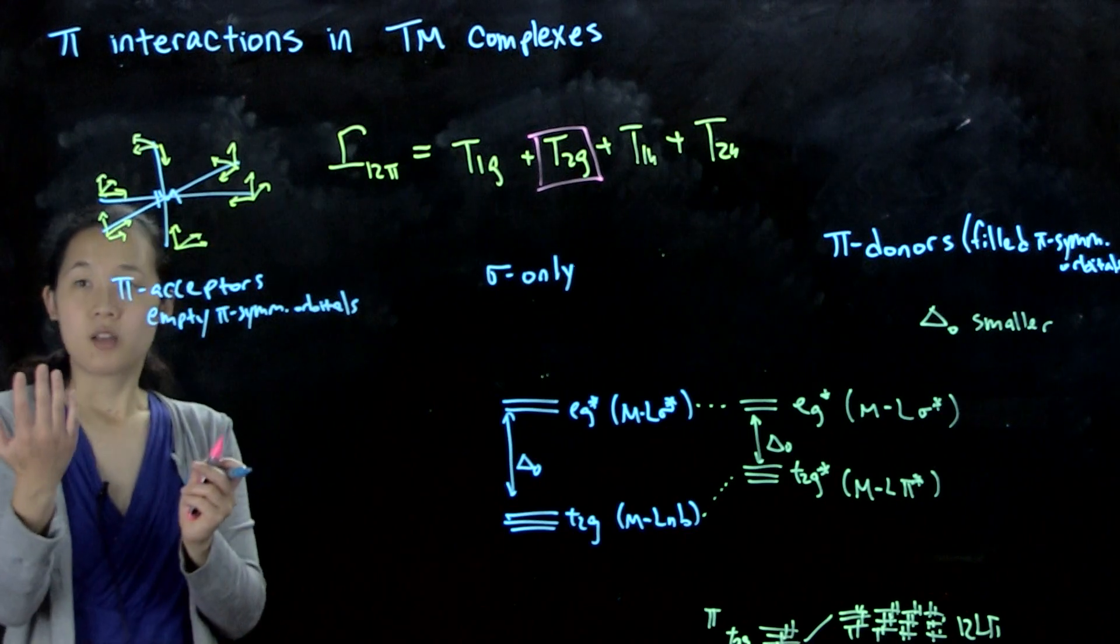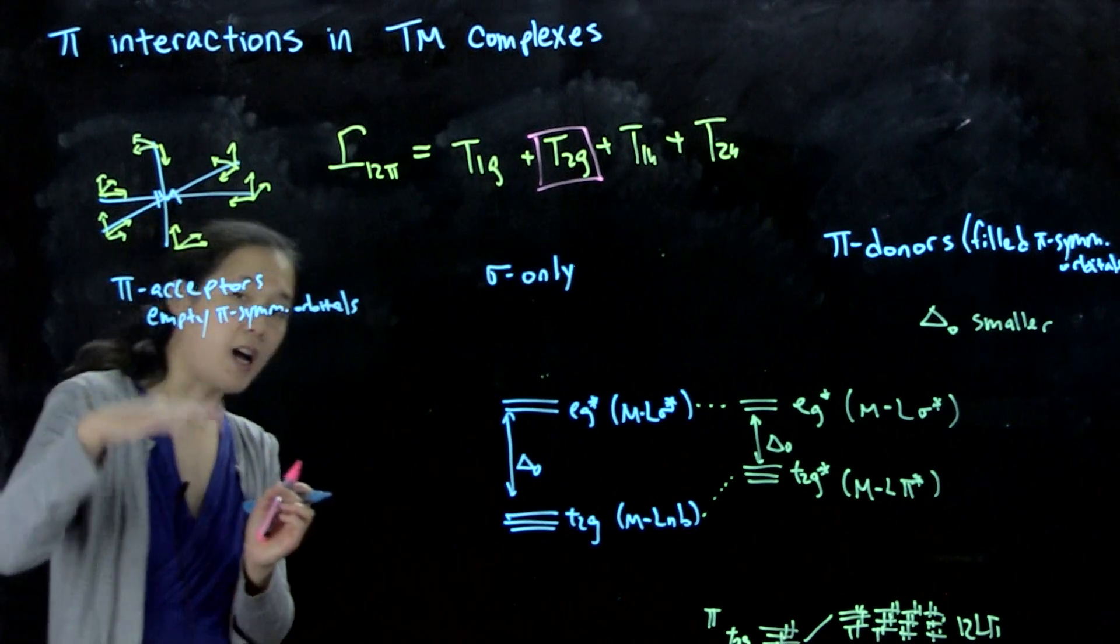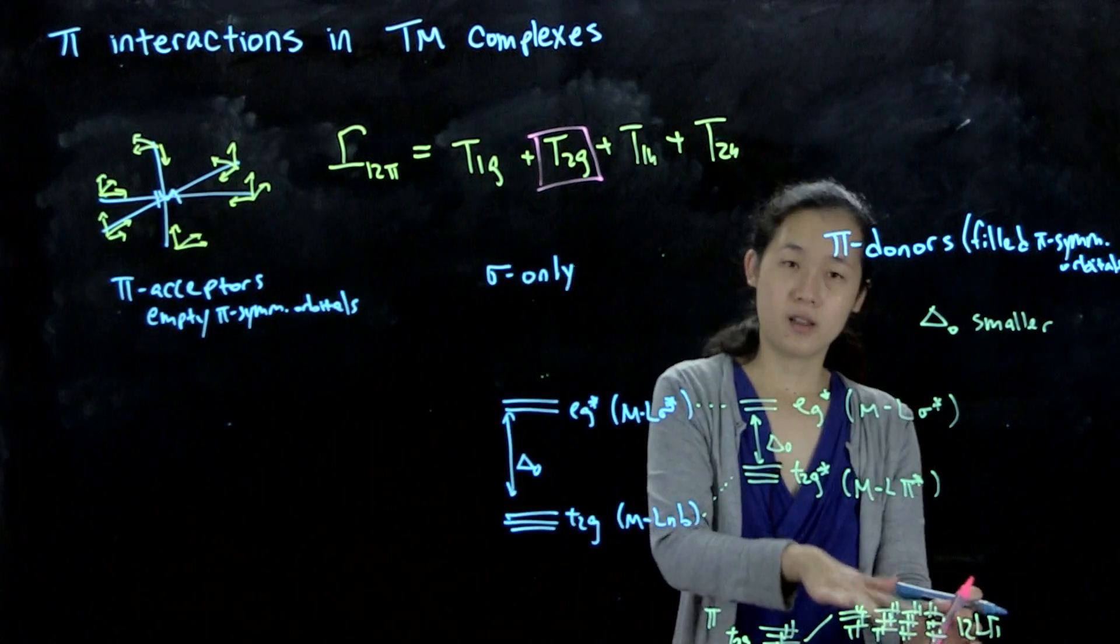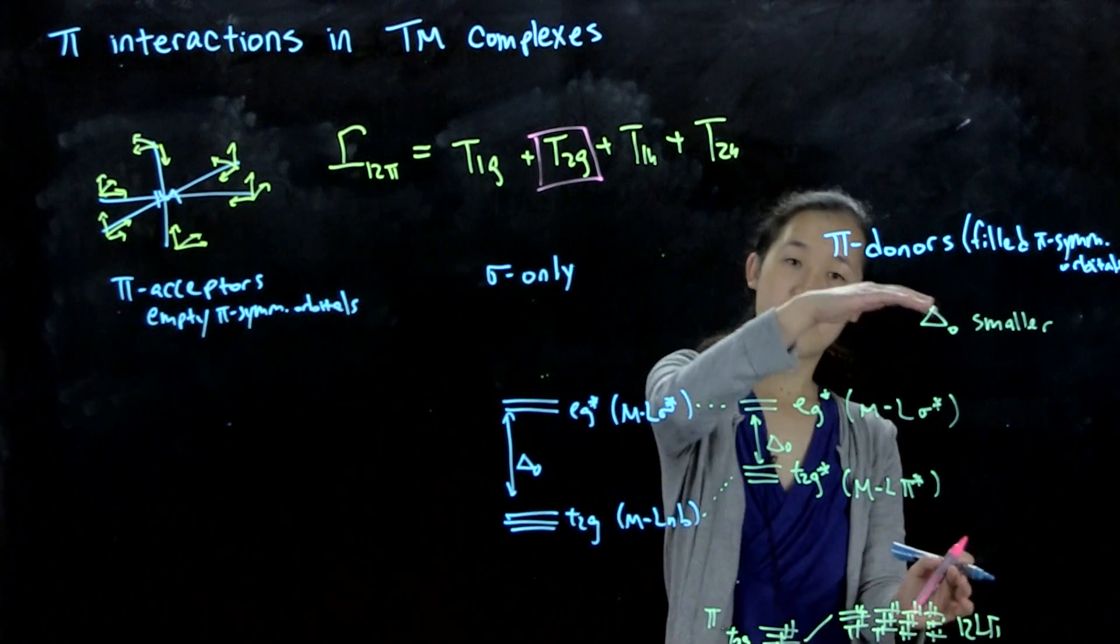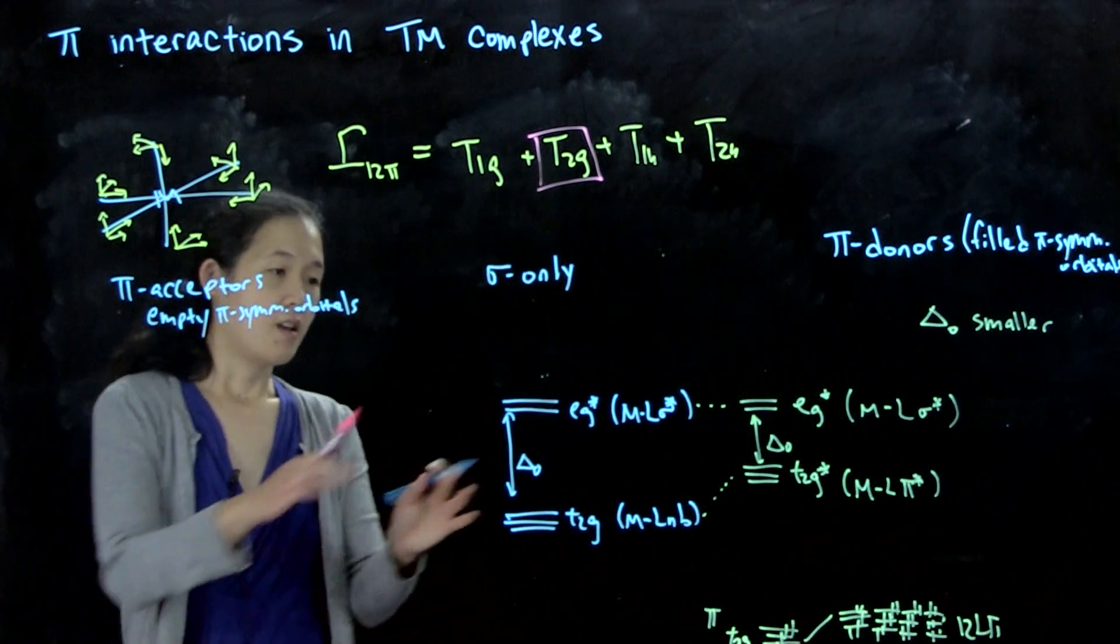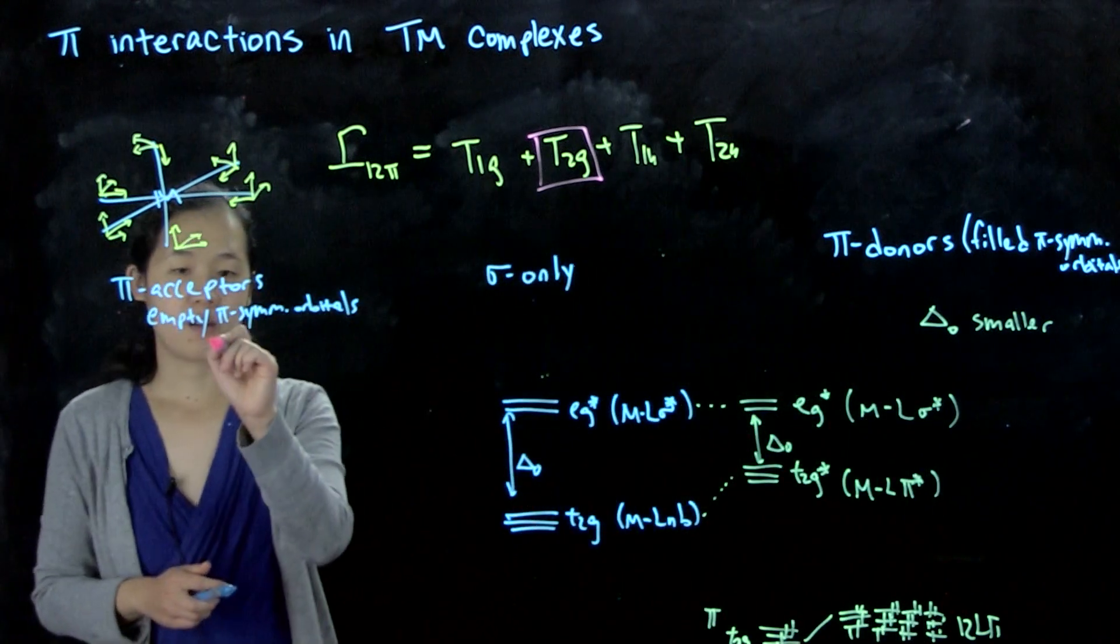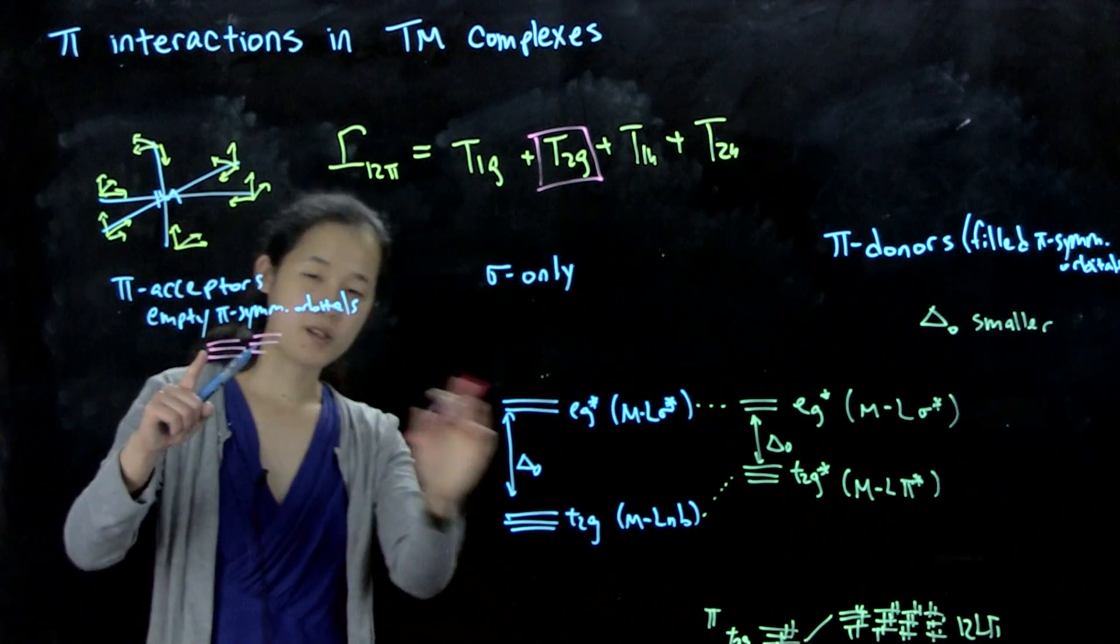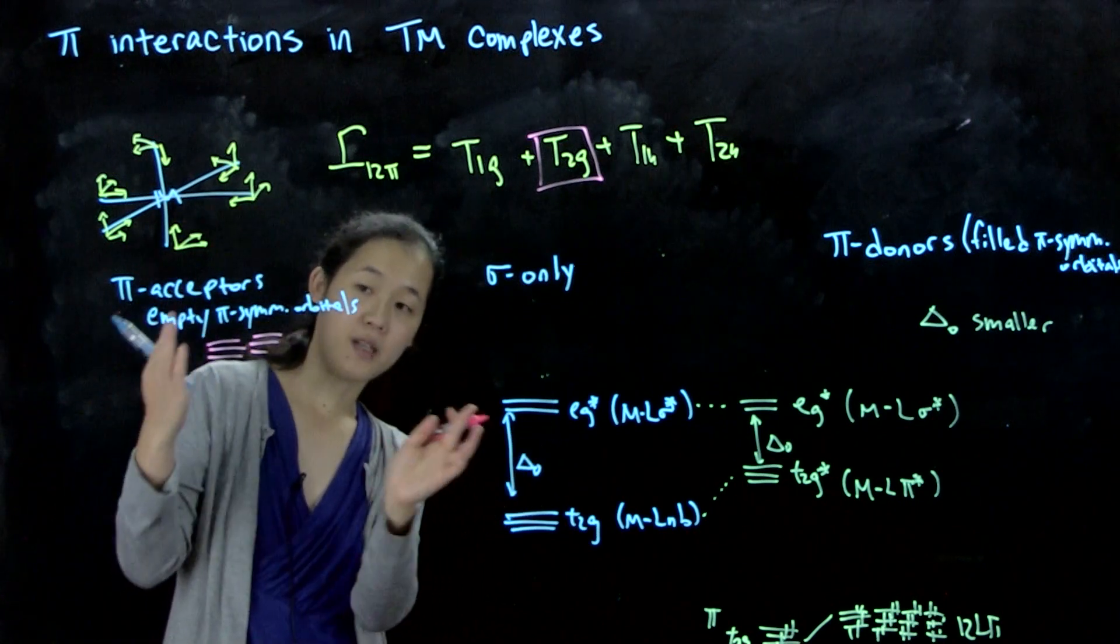These empty pi-symmetry orbitals, like in CO, are empty pi-stars. So they are usually higher in energy. We have our filled orbitals here. And then we have anti-bonding orbitals on the ligands up here. They're going to be higher in energy than our d orbitals. So they're going to be up here. When I say they're low-lying, they're still close enough in energy to the d orbitals, but they're still going to be higher.